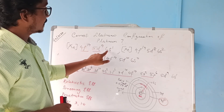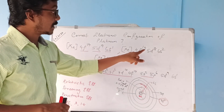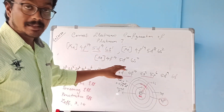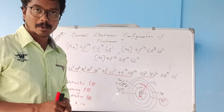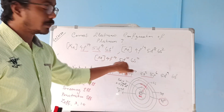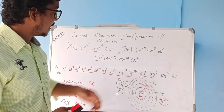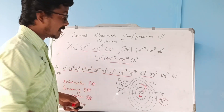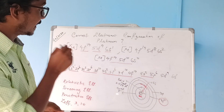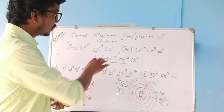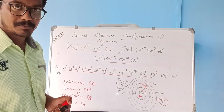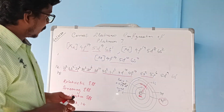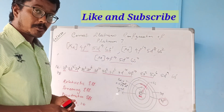Three electronic configurations are given for platinum: 4f14-5d9-6s1, 4f14-5d8-6s2, and 4f14-5d10-6s0. Most probably we will tick mark the third one, because in the outermost valence shell there are f, d, and s electrons present. Let's find out which is actually the correct one.